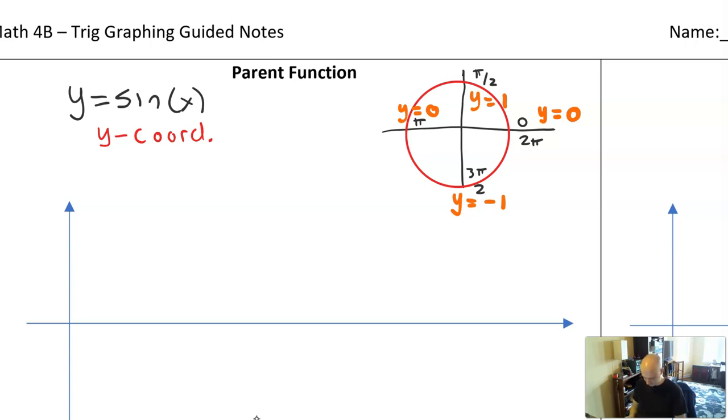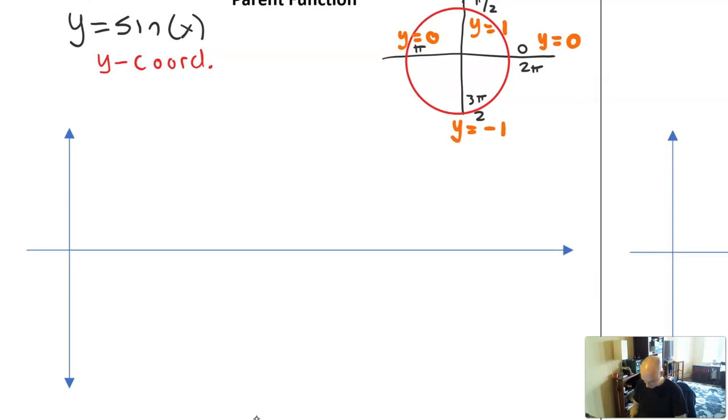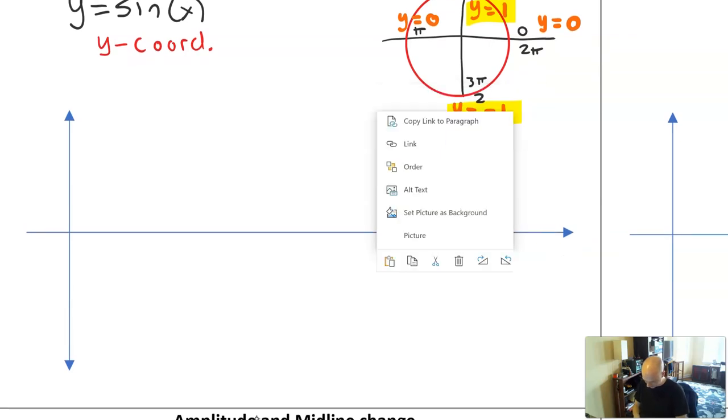So this is going to repeat infinitely forever. What I noticed also is that the highest value is 1, and the lowest value is minus 1.